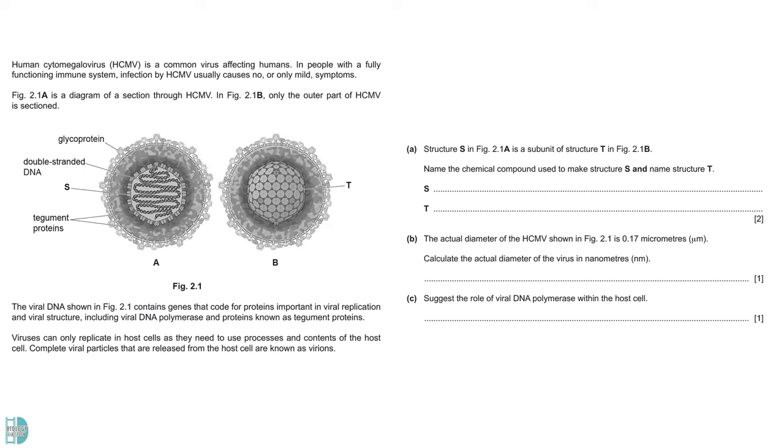In question 2, you have the information about a virus and its structure is being shown here. Question A, name the chemical compound used to make structure S, and name structure T. The structure which contains viruses' genetic material is called a capsid. It is a protein coat. So, S is protein, and T is capsid.